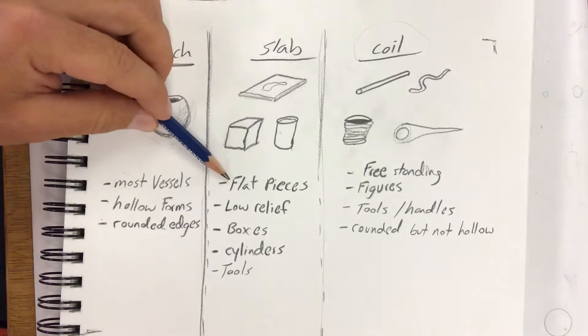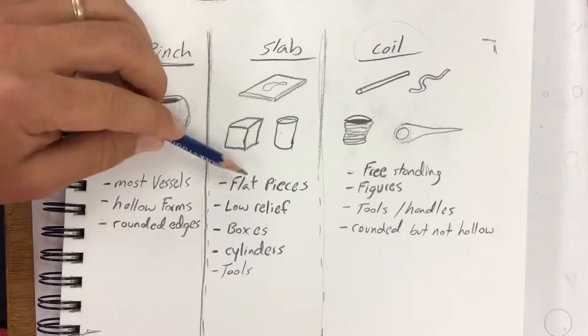Slabs - any flat pieces, great for low relief. We could roll a slab and then build up off of it or carve into it.